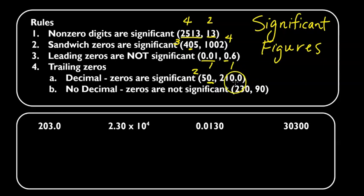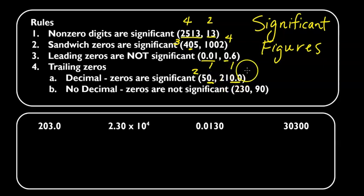2010.0 — there is a decimal, so the trailing zeros at the end are also going to be significant. So we have 1, 2, 3, 4 — four significant figures.